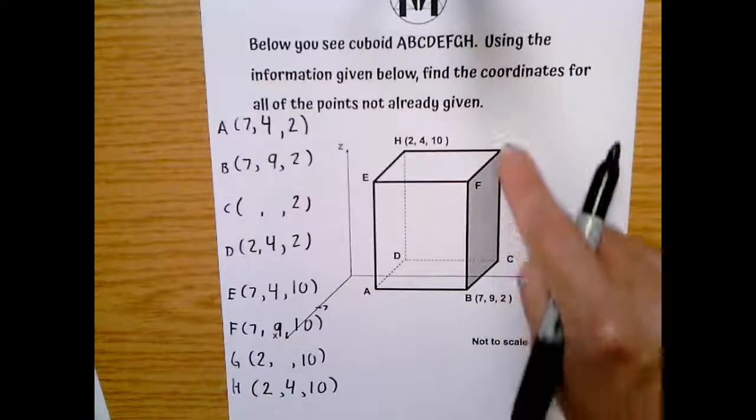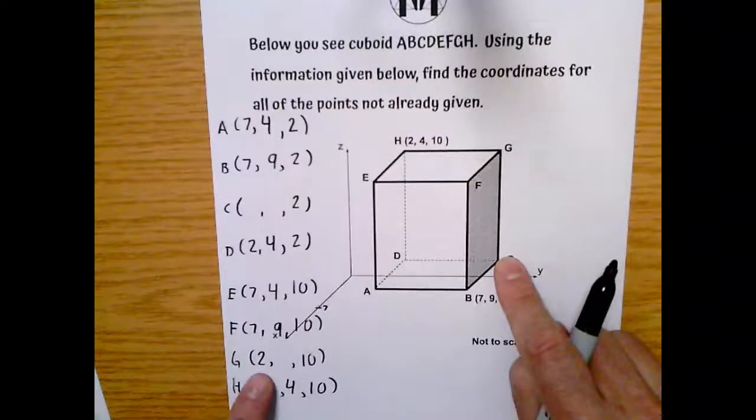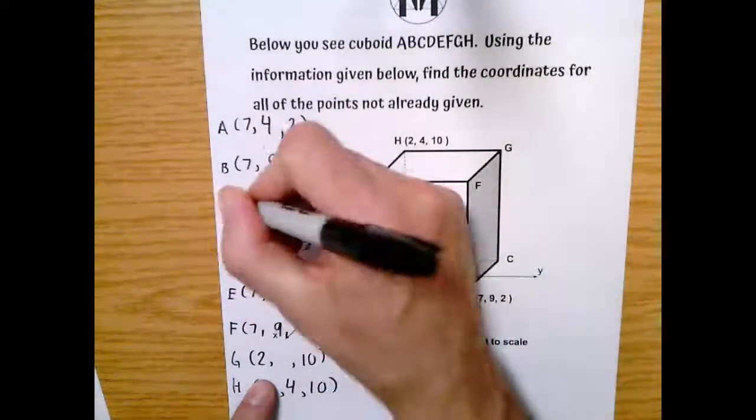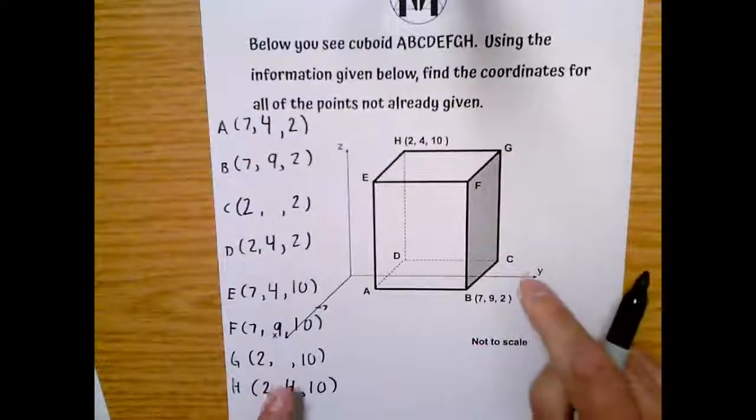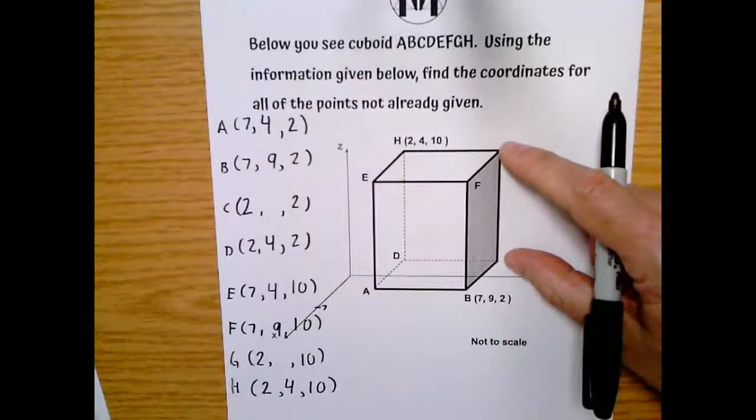So C is directly below G. So what that means, everything about C and G are going to be in common except for the Z. So we already have the 2 for G. So that means we have the 2 for C. And so our last bit is just to find the Y values for C and G. And they will be the same.